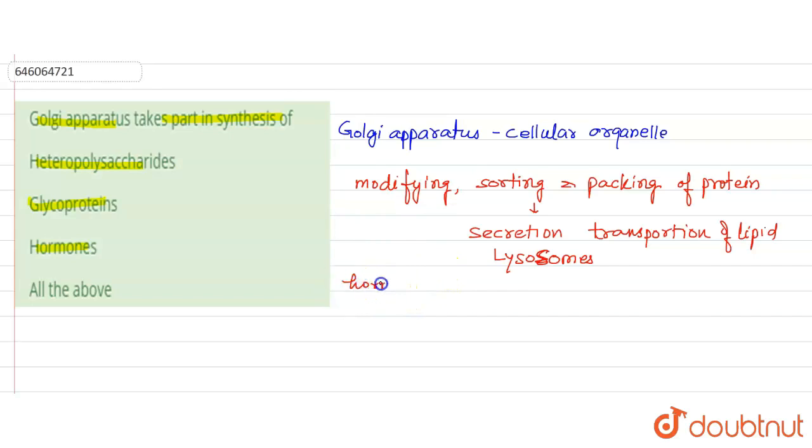Then the hormones that are produced by the endocrine gland are basically mediated by the Golgi apparatus, Golgi body.